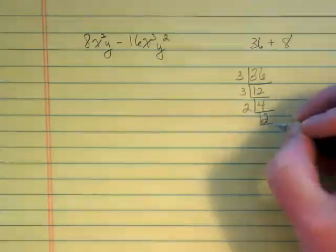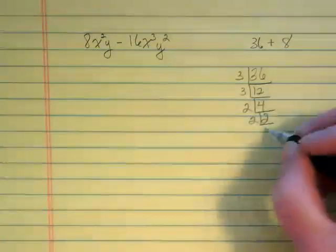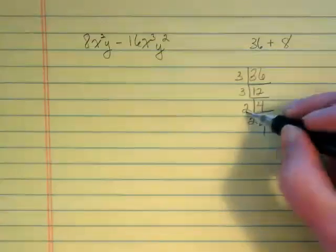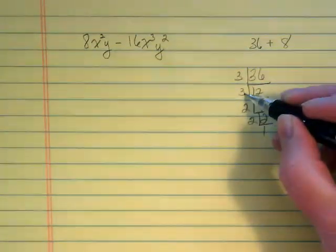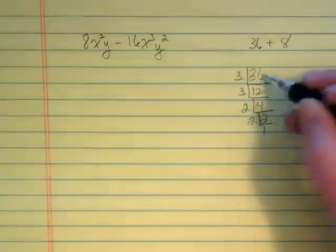I'm ending up with two 3's and two 2's. So 2 times 2 is 4, 4 times 3 is 12, and 12 times 3 is 36.